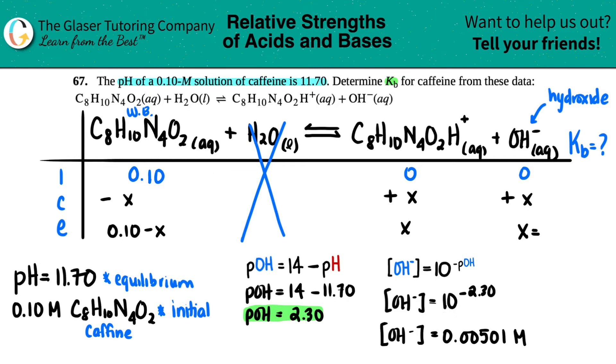Now I know that that's what this x equals. That's the OH minus concentration. So this equals 0.00501. But if this was x, and this is x, this is the same number. So 0.00501.